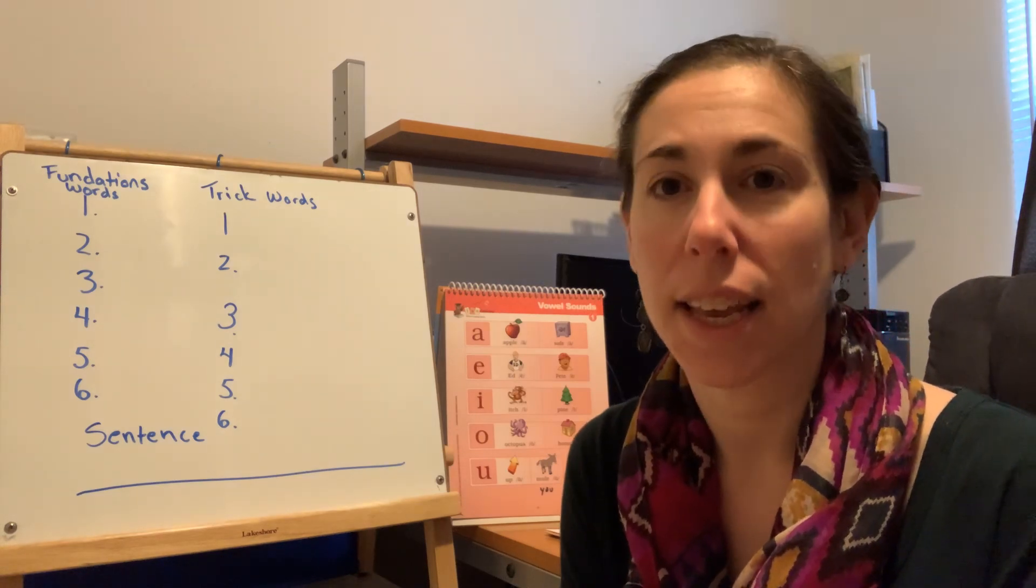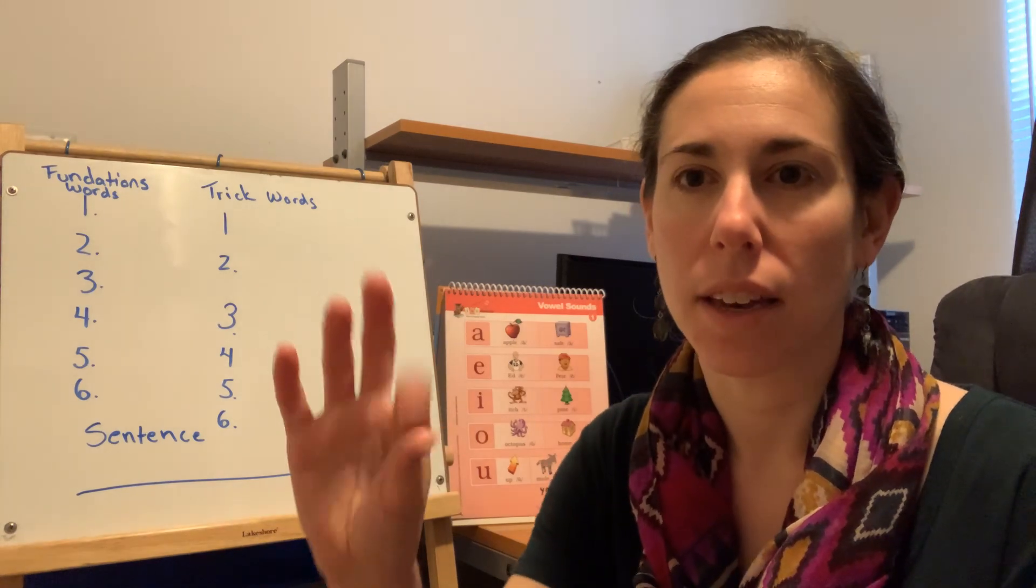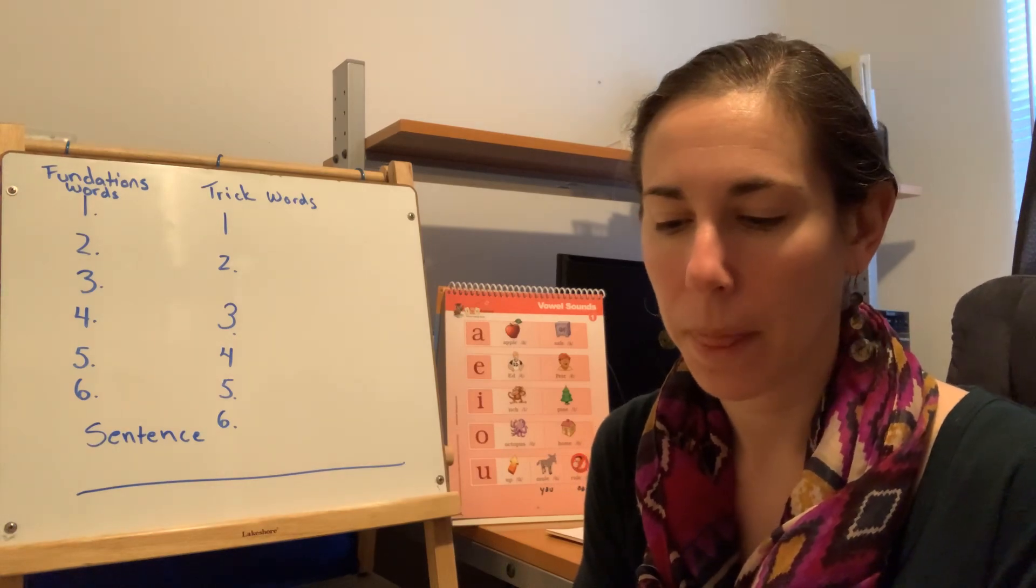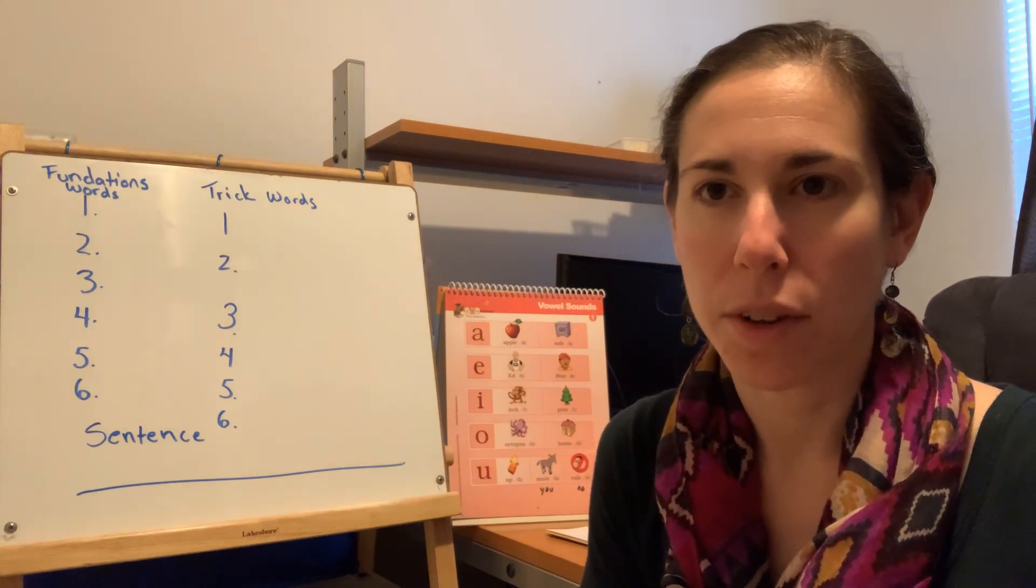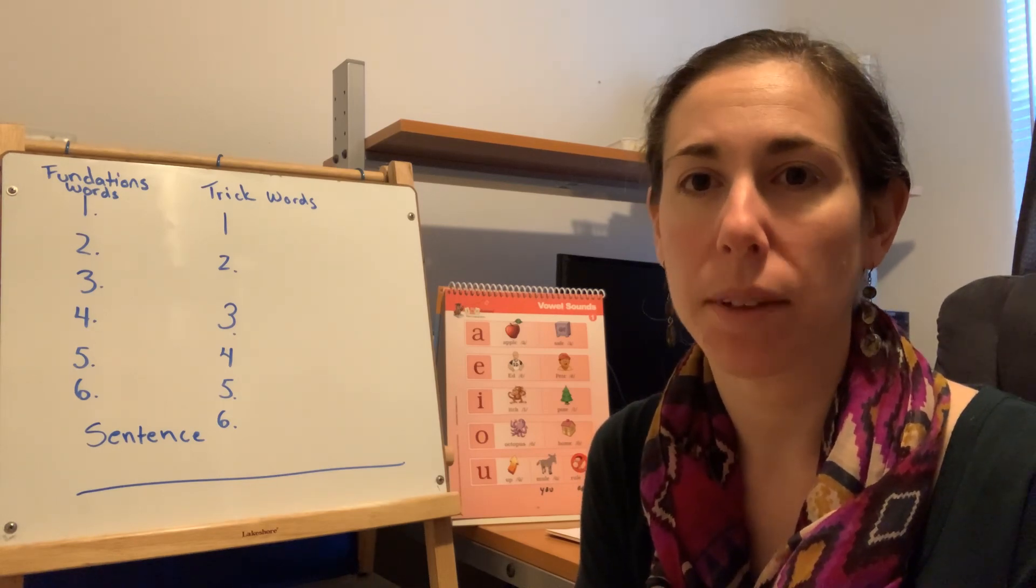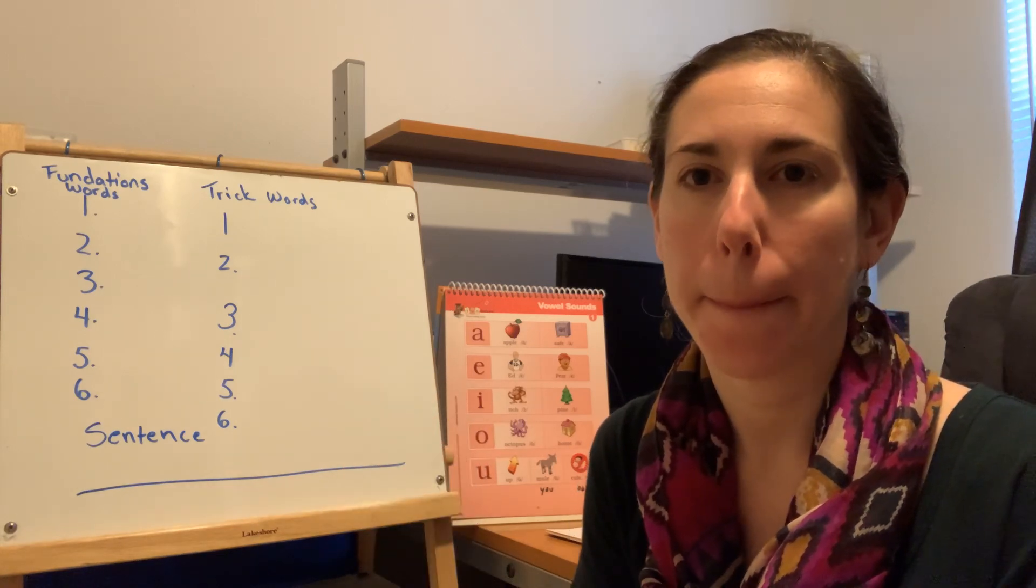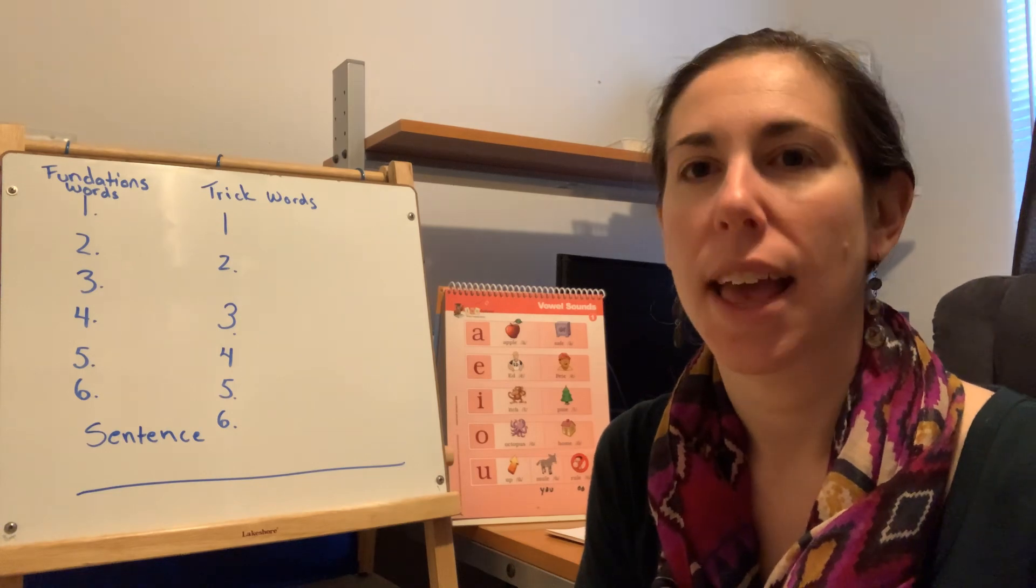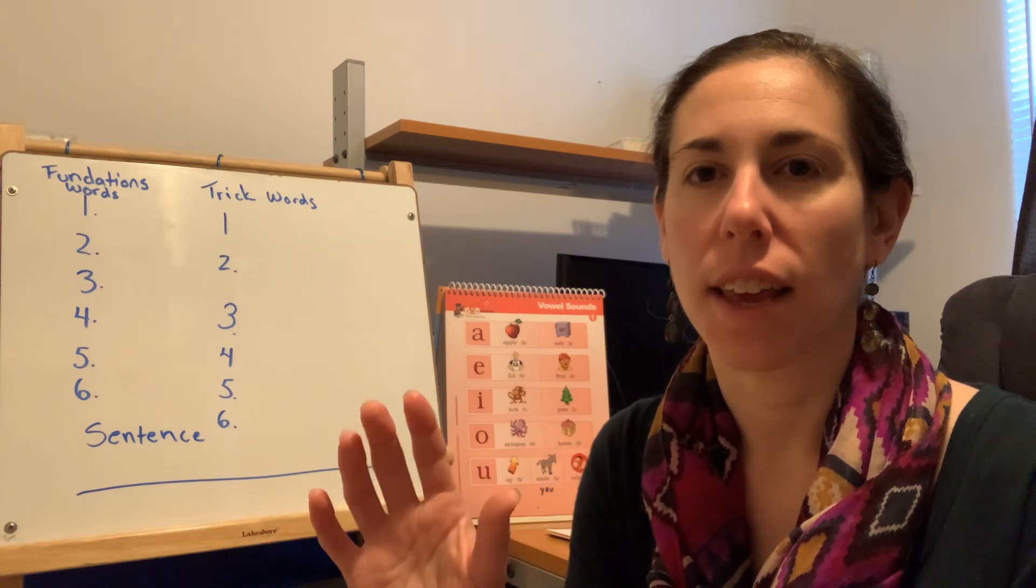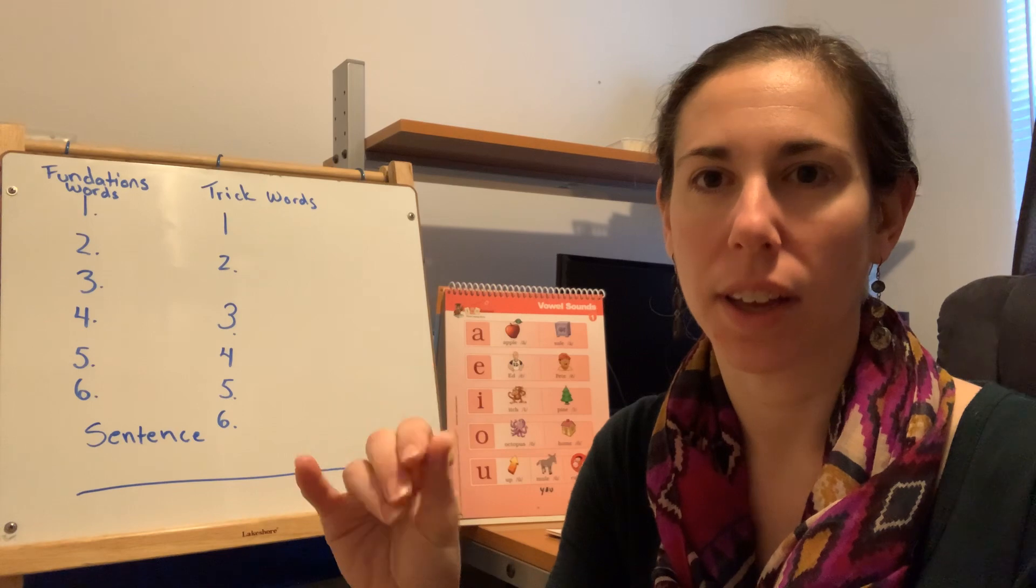so your first word is name. Say name, tap name. Number two, flame. Say flame, tap flame. Your next word is cave. Number three is cave. Say cave, tap cave.